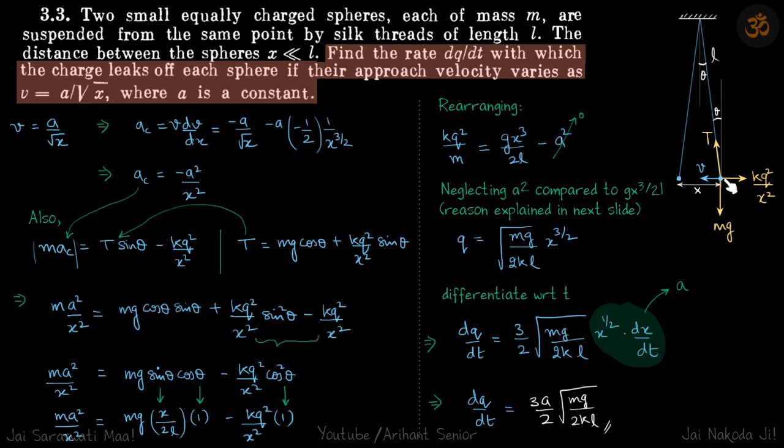If we write the force in x direction on this ball, that will be mass into its acceleration and its value will be t sin theta minus kq square by x square. So t sin theta will be in this direction minus kq square by x square.